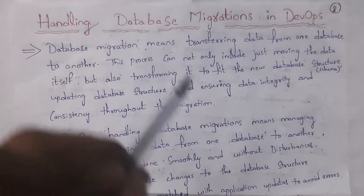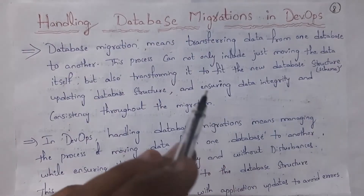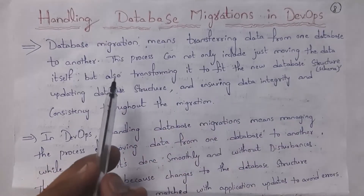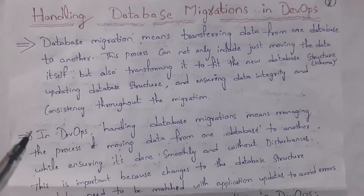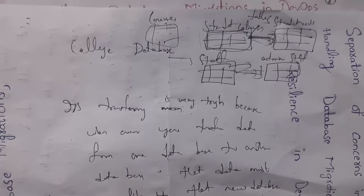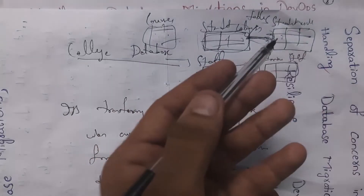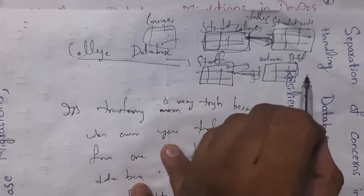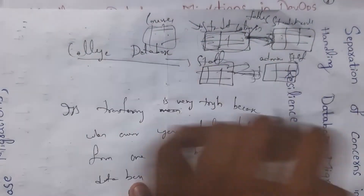Next I will explain how to handle database migration in DevOps. Migration means transferring something from one place to another, and database migration means transferring data from one database to another database. This process can not only include just moving the data itself but also transforming it to fit the new database schema, updating the database structure, and ensuring data integrity and consistency throughout the migration. Database schema is the overall structure of a database — for example, a College Database may contain a Student Table, Staff Table, Admin Staff Table, Student Results Table, and Courses Table, along with their connections. This entire structure — except the actual data — is known as the schema.